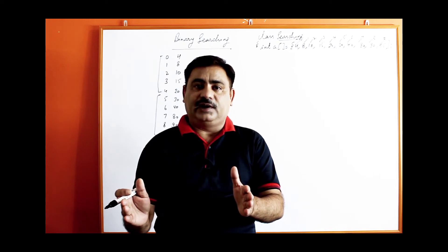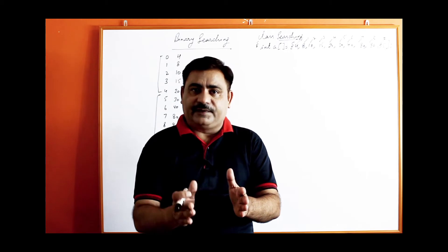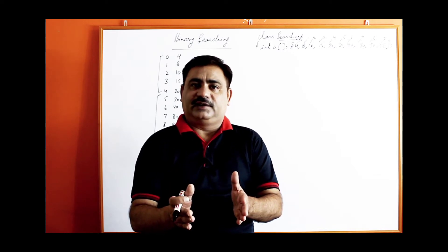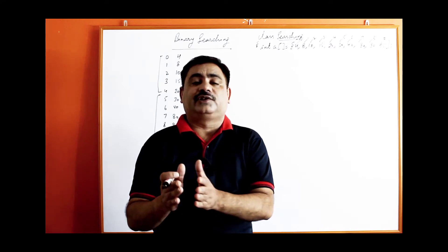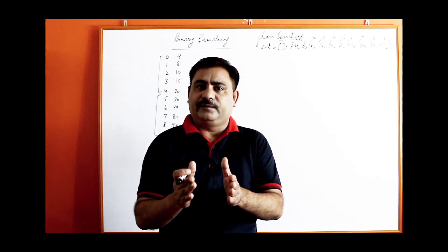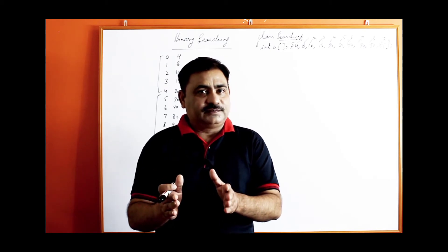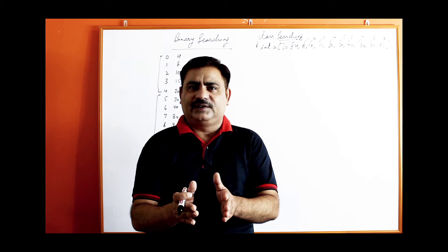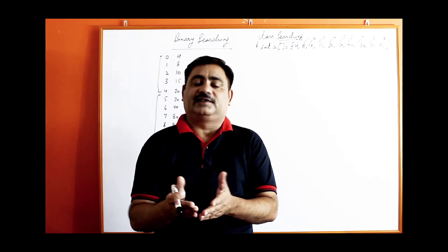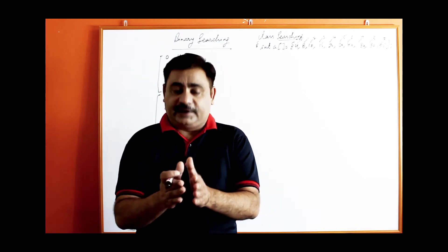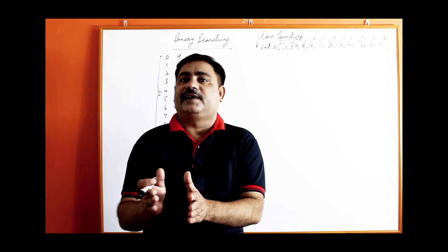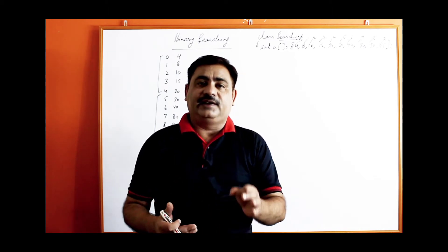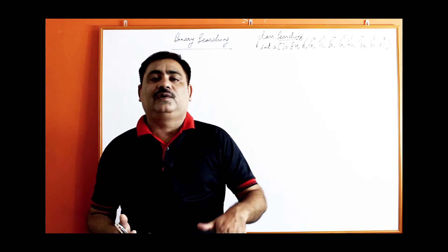Then again, do the same process — find the middle, which is the 75th index. Compare whether it is equal or not. If equal, search is completed. If greater, search between 75 and 100. If smaller, search between 50 and 75. Suppose it is smaller, find the middle again — say the 67th index. Compare; if equal, done. If greater, compare between 67 and 75; if smaller, between 50 and 67. Repeat until the value is found.